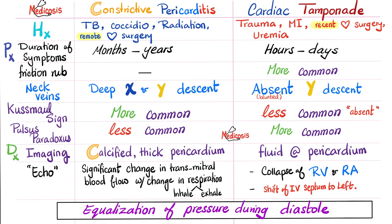Kussmaul sign is more common in constrictive pericarditis — almost absent in most cases of cardiac tamponade. As for pulsus paradoxus, it is less common in constrictive pericarditis but more common in cardiac tamponade. On imaging, constrictive pericarditis will show a calcified thick pericardium — the water bottle sign — while cardiac tamponade will show fluid in the pericardium.